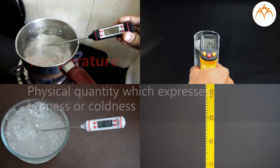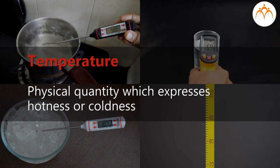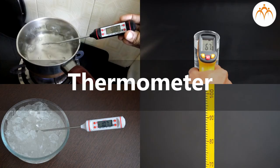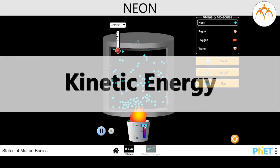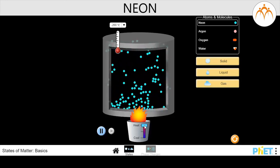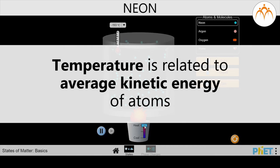Summary. Temperature is the physical quantity which expresses hotness or coldness. It is measured with a thermometer. The total kinetic energy of the atoms in a substance is the measure of heat contained in that substance. Temperature of the substance is related to the average kinetic energy of atoms.